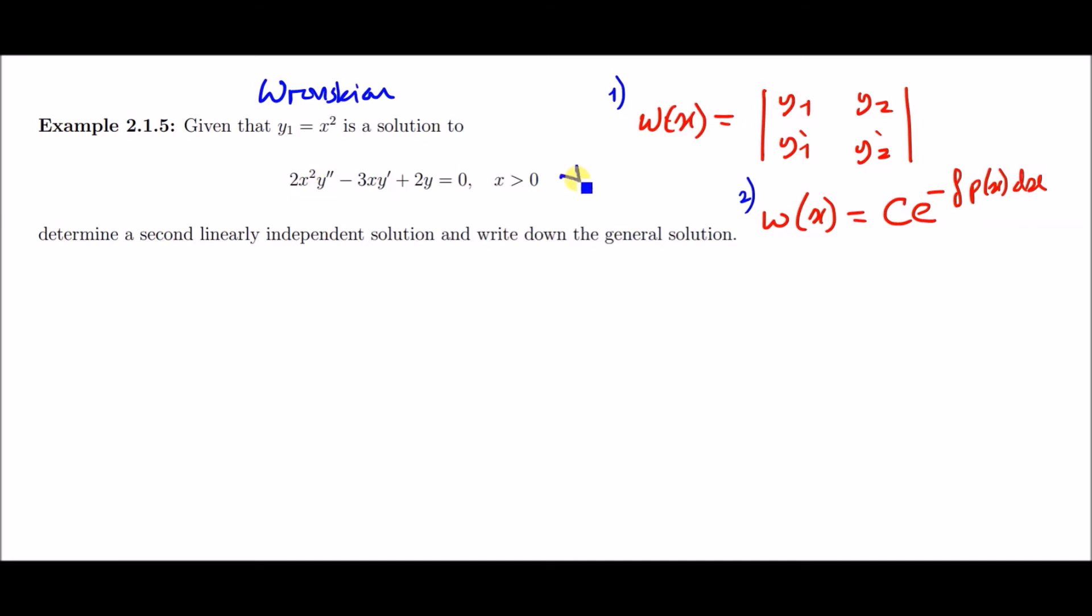To solve this kind of question we need to simply equate the Wronskians here. Using the first definition we have the determinant of y₁ which is x squared and its derivative which is 2x. For the purpose of just making it look easy we're going to just call y₂ as y because it's the only y variable left, and its derivative would be y prime.